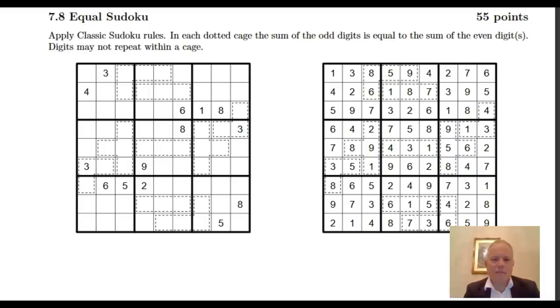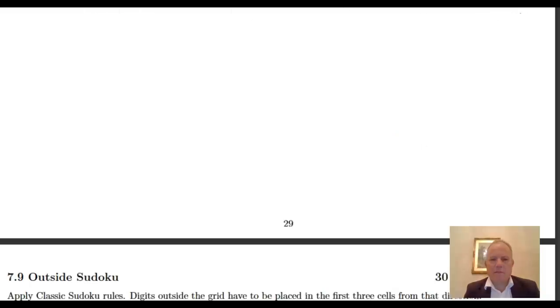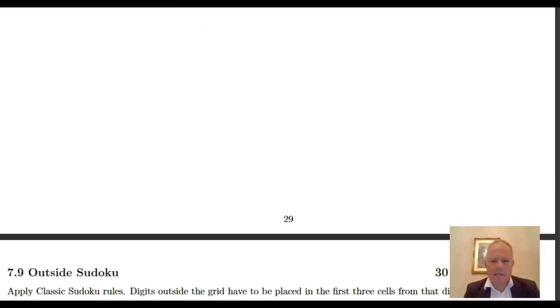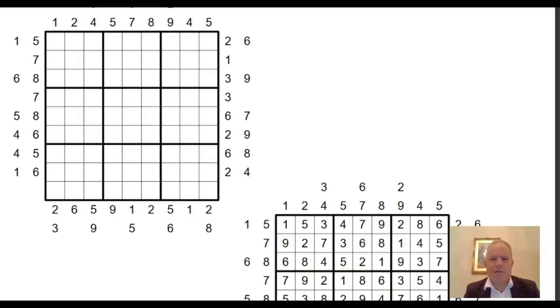Now remember in this booklet it's only an example booklet so we do have the answers next to the puzzles. And then outside Sudoku where the digits outside the grid have to be in the first three cells from that direction inside the grid.